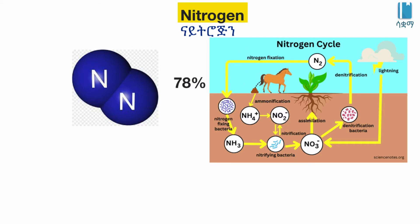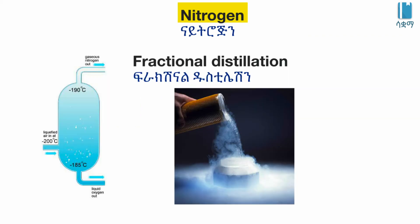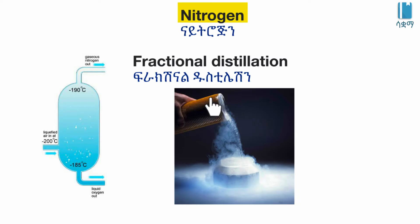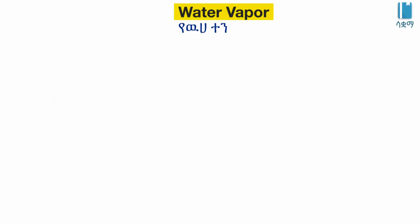In the industry system, fractional distillation of the process — nitrogen is in the liquid form of the liquid.